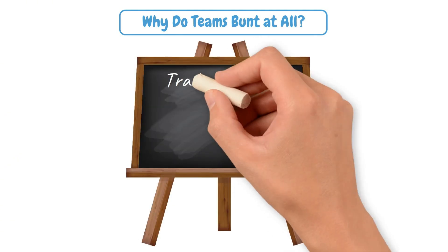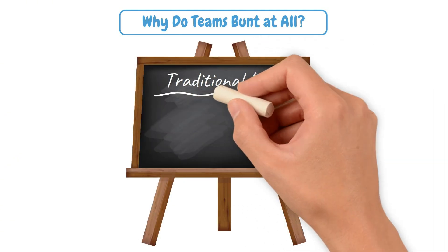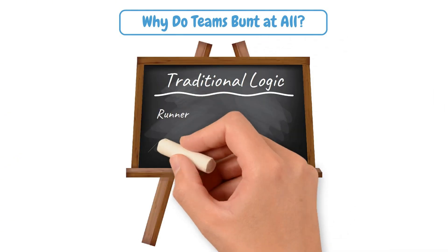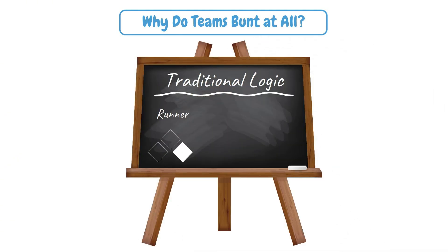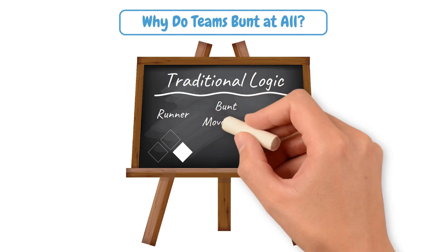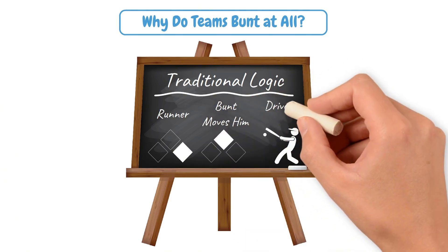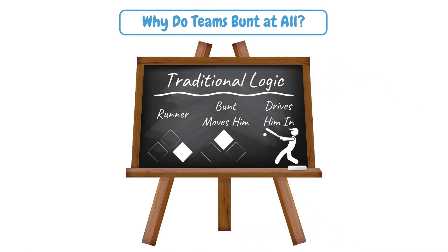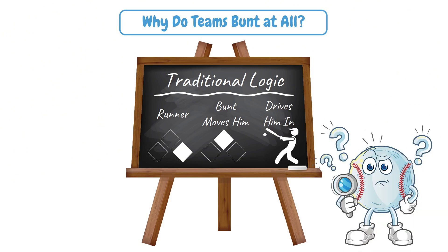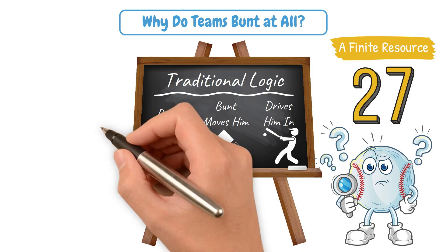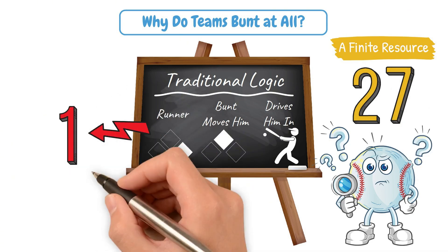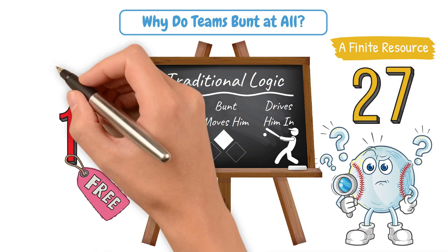For decades, baseball strategy has leaned on the bunt to manufacture a run. You move the runner over, get them into scoring position, and give the next guy a chance to drive that base runner in. But here's what that logic ignores: outs are a finite resource. You only get 27 of them. Giving away one for free? That's a big deal.